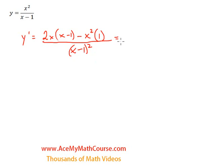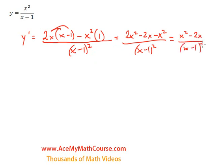So let's simplify this a little. So I'll distribute the 2x, so that'll be 2x squared minus 2x minus x squared all over x minus 1 squared. So 2x squared minus x squared is x squared minus 2x over x minus 1 squared.